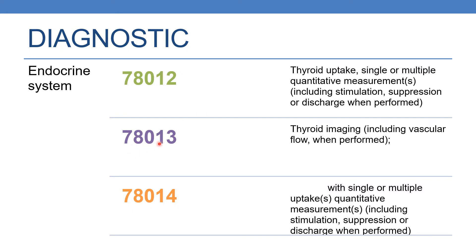The next code is 78013. The description is thyroid imaging including vascular flow when performed. The next code is 78014. This comes under thyroid imaging with single or multiple uptakes, quantitative measurements, including stimulation, suppression and discharge when performed.